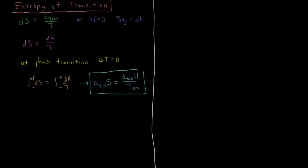This is a very useful formula because it addresses what the entropy change is during such phase transitions. So now, even if there are phase transitions, we can find out what the absolute value of entropy is at any given temperature, if we know the enthalpy that occurs during that phase transition and if we know the constant pressure heat capacity at all values of temperature.